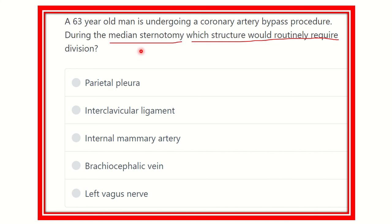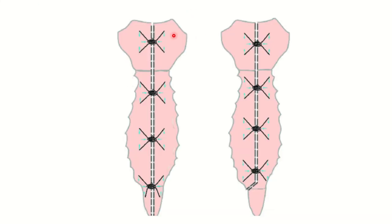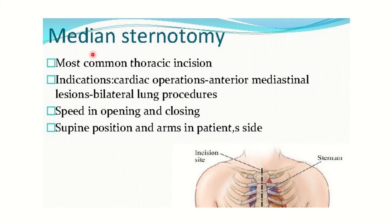We need to find which option is divided routinely during median sternotomy. In this picture we can see the median sternotomy incision — it is done at the midline, starting at the jugular notch of the manubrium of the sternum and descending down. These pictures show the median sternotomy incision, and we need to see which structure must be cut mandatorily.